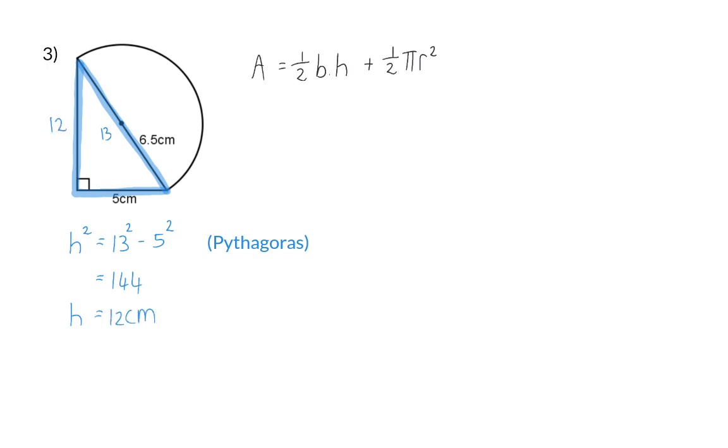So, to determine the area of this triangle, we have a half multiplied with the base of 5 and the perpendicular height of 12.